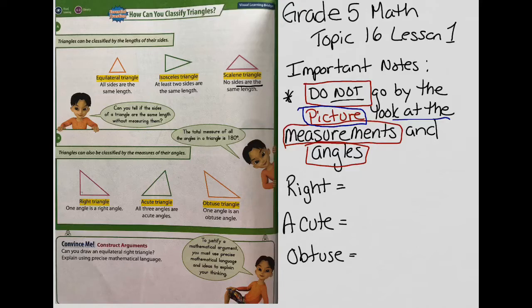I want you to look at the note that I've made over here before we start looking at any of the pictures. An important note: do not go by the picture, look at the measurements and the angles. When we classify these, do not go too quickly looking at the picture and think 'oh it looks all equal, it must be equilateral,' or 'none of the sides look the same, it must be scalene.' The pictures can be very deceiving and misleading, so go by the lengths and go by the measurements.